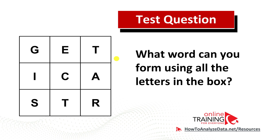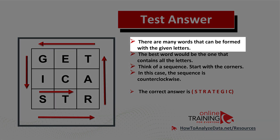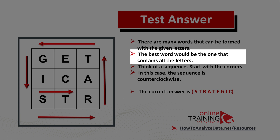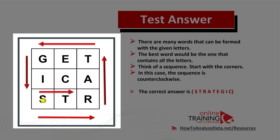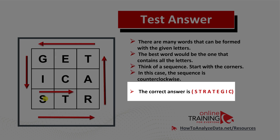Do you think you figured out the answer? Let's continue to see if we can solve this challenge together. There are a lot of different words that could be formed with the given letters, but you need to find the word that best matches all the letters presented. You should start looking in the corners. In this case, the pattern is counterclockwise. We have the word 'strategic', which is formed starting in the bottom left corner — flowing right to left, then bottom to top, then left to right, ending in the middle.